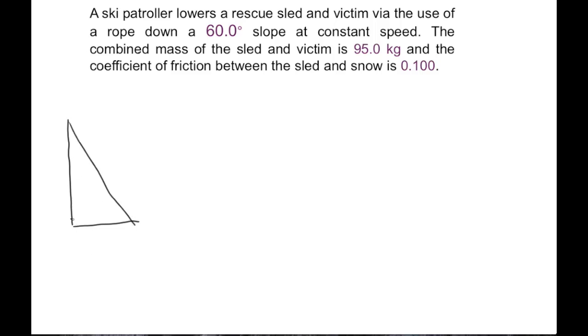So we'll start by drawing our slope. Notice that the question says that the slope is at a 60-degree angle. This angle is measured from the x-axis. For now I'm just going to label that theta. On our slope is a sled and a patroller who is using a rope to lower that sled. So we have our patrolman lowering the sled using the rope, so its direction of motion is down the slope.